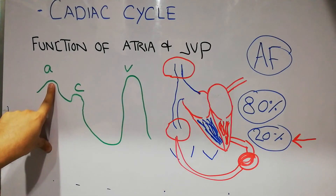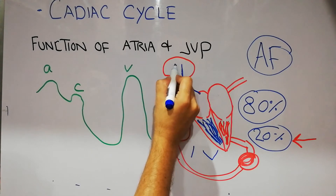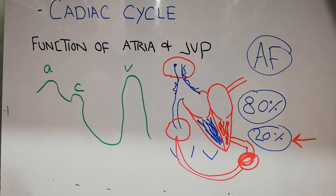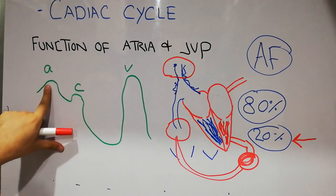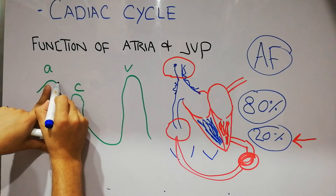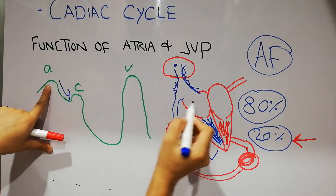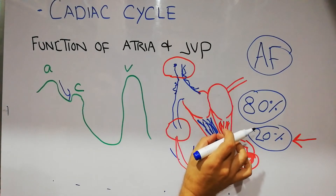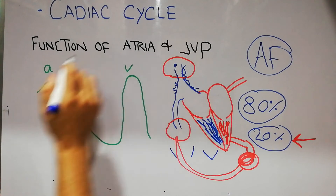The first is the A wave — the atrial contraction wave. When the atria contract, some force and vibration is transferred into the jugular vein, causing an upward spike in the jugular venous pressure, and that is recorded as the A wave. As soon as the atrial contraction is over, the pressure in the atria starts decreasing because the blood has gone into the ventricles, and so the wave comes back down.